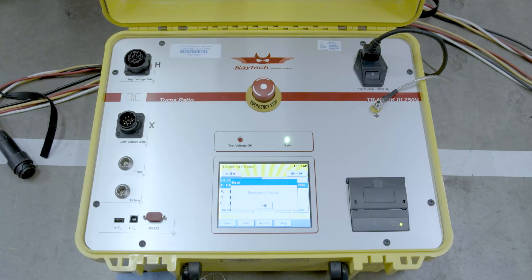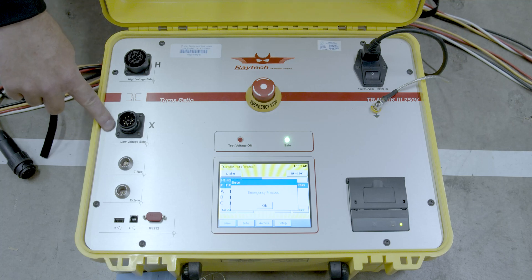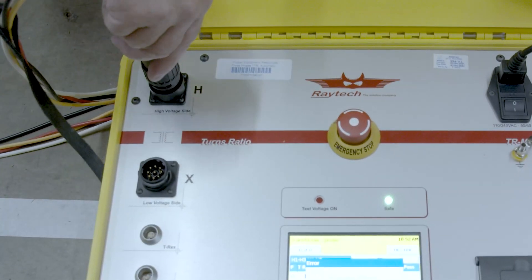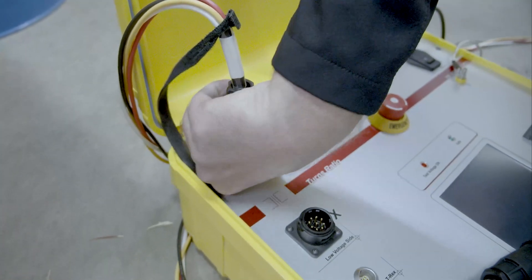Additionally we want to go to the connections for the high side and low side of the transformer. H being primary, X being secondary. Here's the H side. Simply center it over the keyed connector and then twist to lock it in place.